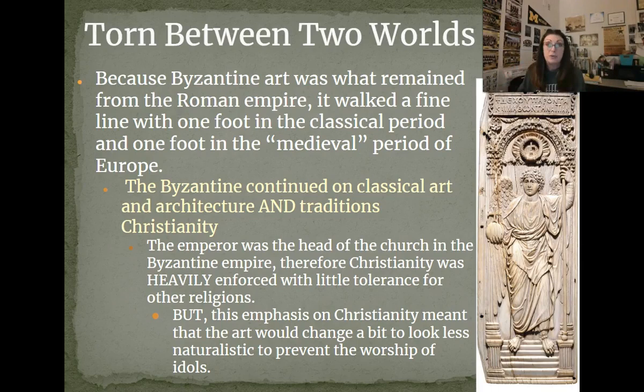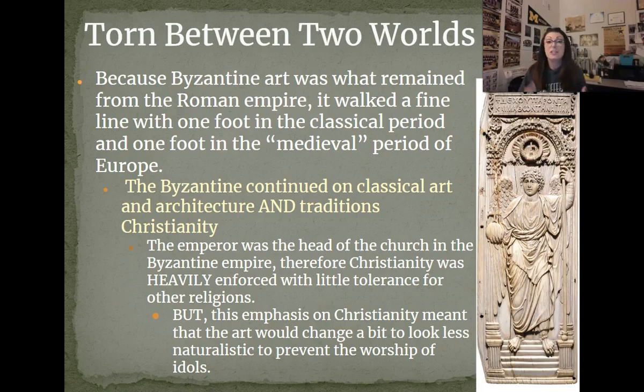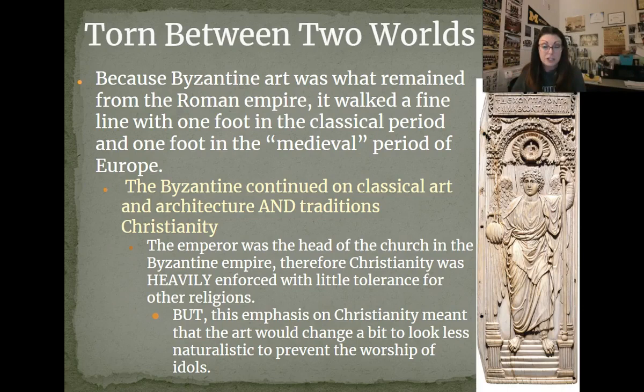But they are going to be doing some things new as they establish their own identity. One big thing that will continue from the Roman Empire into the Byzantine Empire is Christianity, which was made legal in 313 CE by an emperor named Constantine, and eventually becomes the official religion of the Roman Empire before it collapses. Byzantine art is really going to be based in Christianity — especially because the emperor was the head of the church — and we're going to see a lot of continuity from classical Greek and Roman art and architecture.